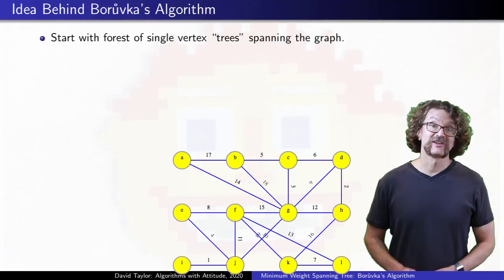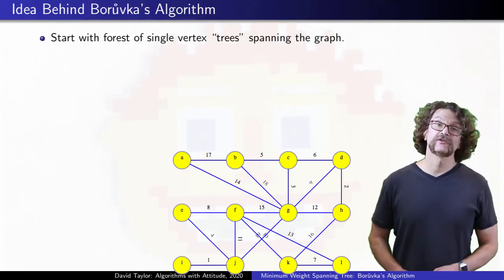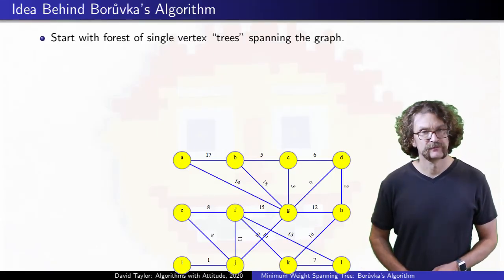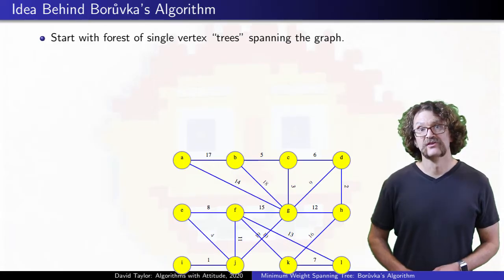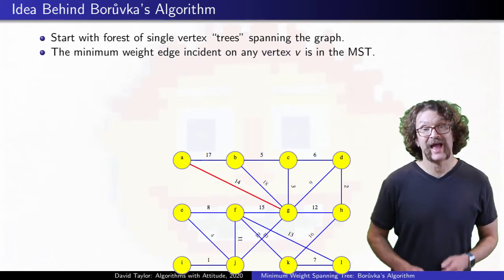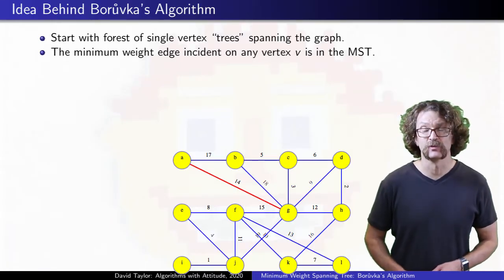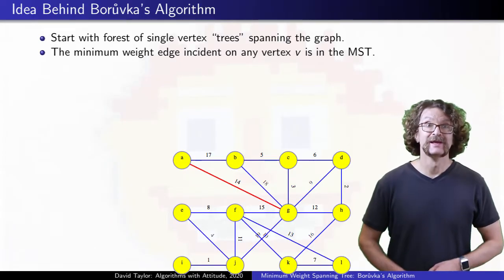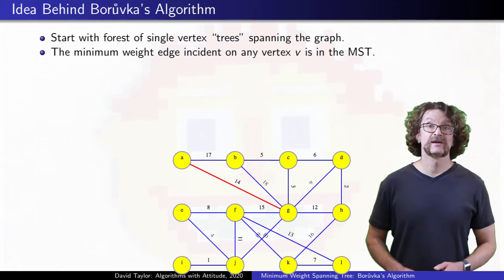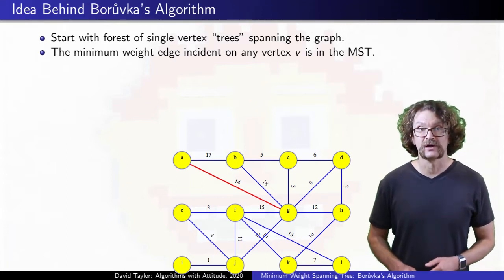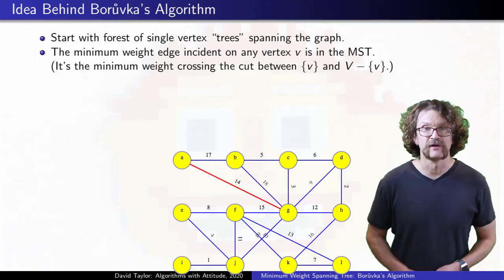We start with a forest of single vertex trees for every vertex in the graph. Notice, with distinct edge weights, the minimum weight edge incident on any vertex has to be in the minimum spanning tree. We can justify that with the cut crossing theorem. Each of those edges is a minimum weight edge crossing the cut between the vertex and the rest of the graph.